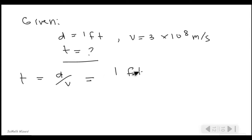So we have one foot here for the distance and three times ten raised to the power of eight meters per second for our speed of light. And as you can see, the unit here is feet but in here we have meter.